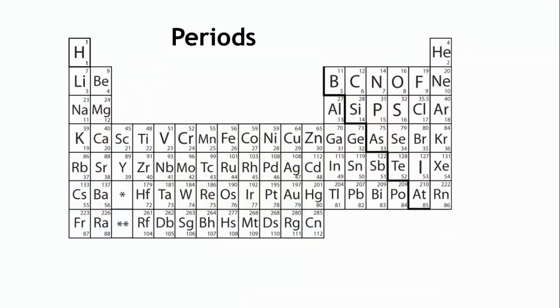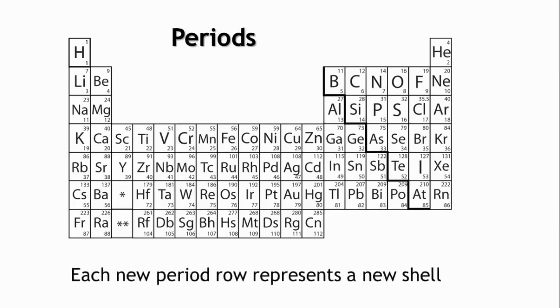The rows going across, from left to right, are periods. Elements in the same period all share something in common. They have the same number of energy shells. Each new period row represents a new shell.